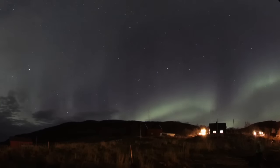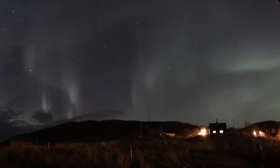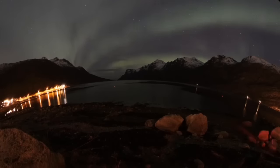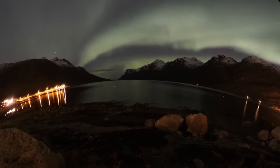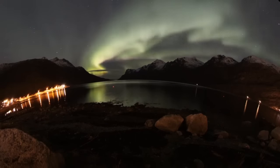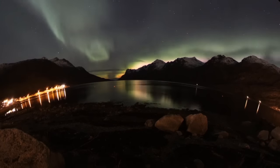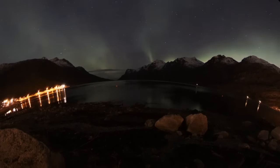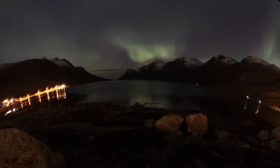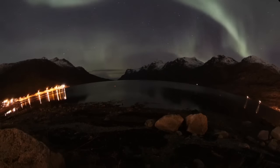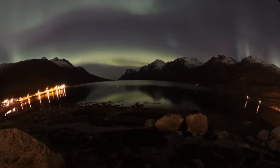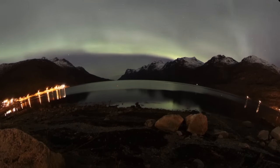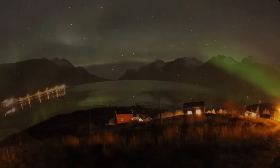Auroras can appear as long, narrow arcs extending overhead from horizon to horizon. From the side, they look like ribbons that kink, fold, and swirl. Their flickering rays align to the Earth's magnetic field and ruffle like curtains in an imaginary wind. They can also spread out like a heavenly crown engulfing the sky in a misty veil.